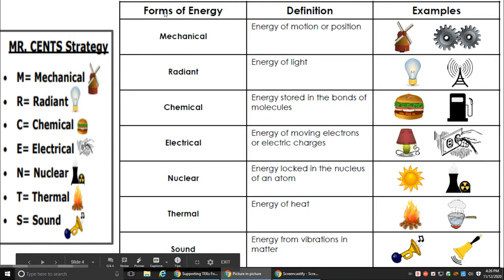So if you wanted to memorize your forms of energy, you can use the Mr. CENTS strategy. So Mr. CENTS stands for all the types of energy forms that you have: Mechanical, which is motion, movement; Radiant light; Chemical food, gas, coal, wood; Electrical, anything you plug in; Nuclear, nuclear power plant; Thermal, think of heat; and Sound.